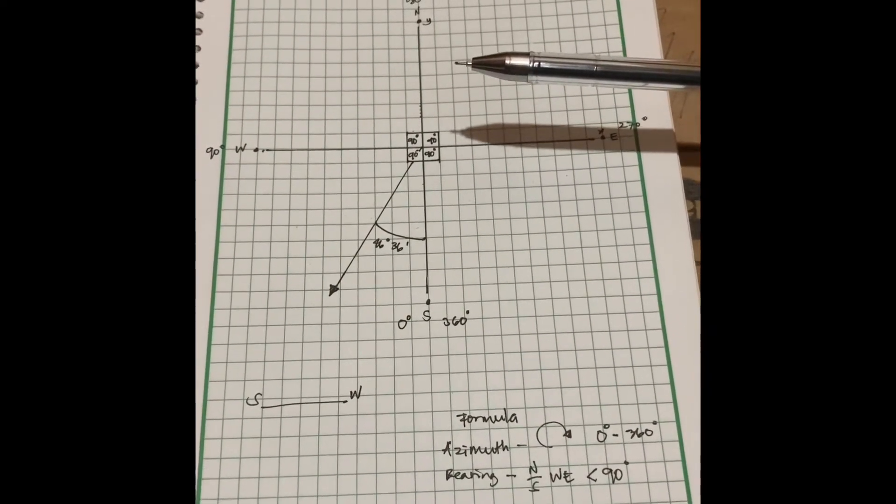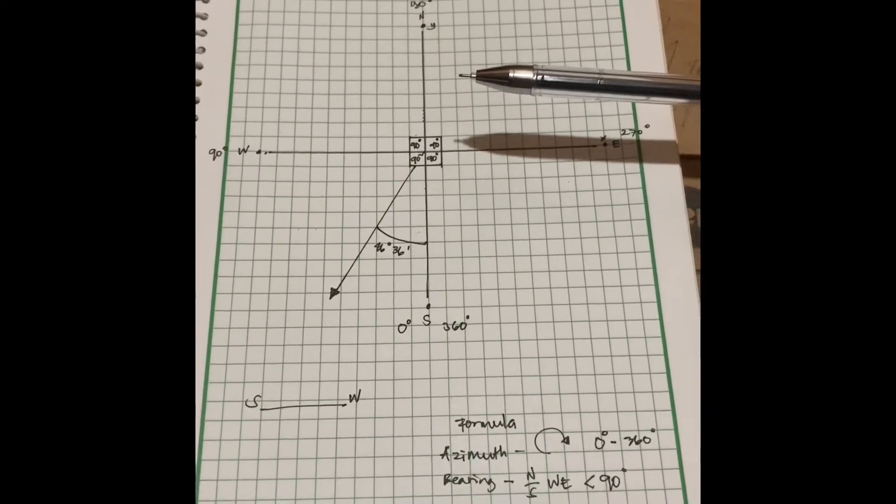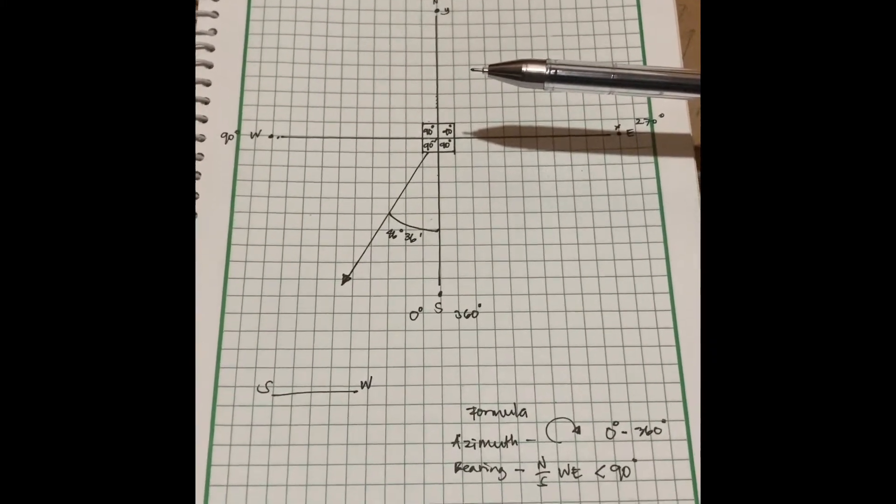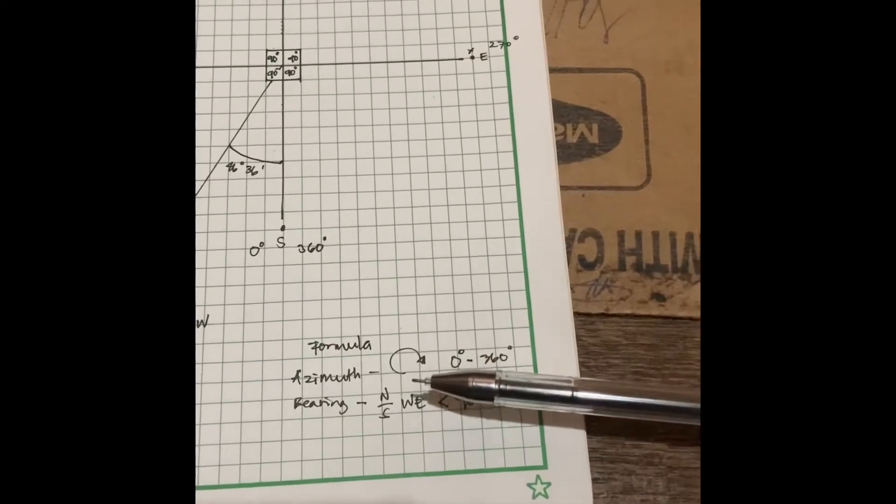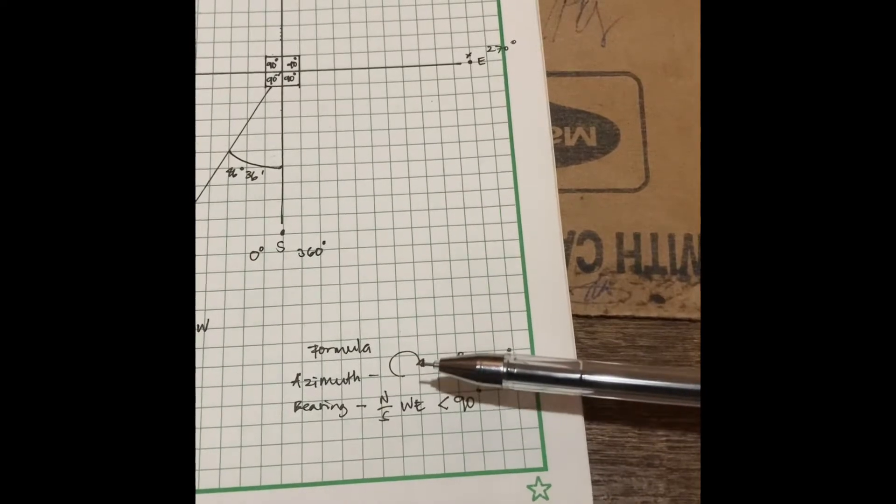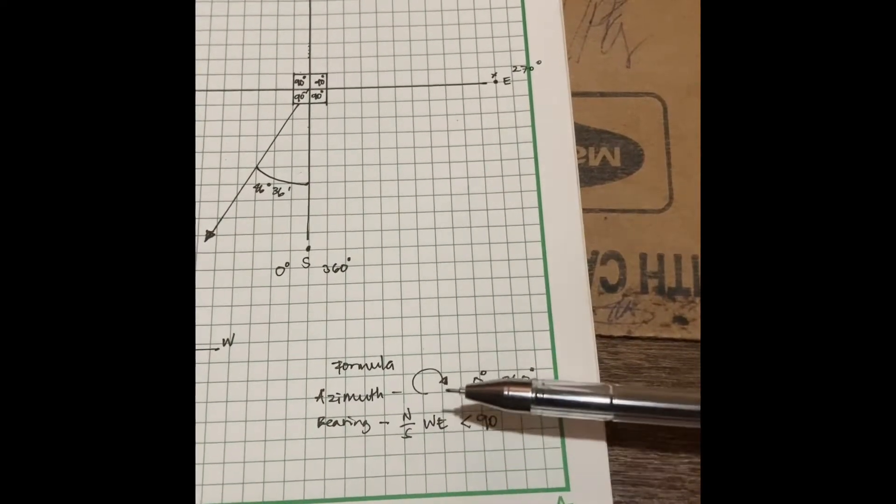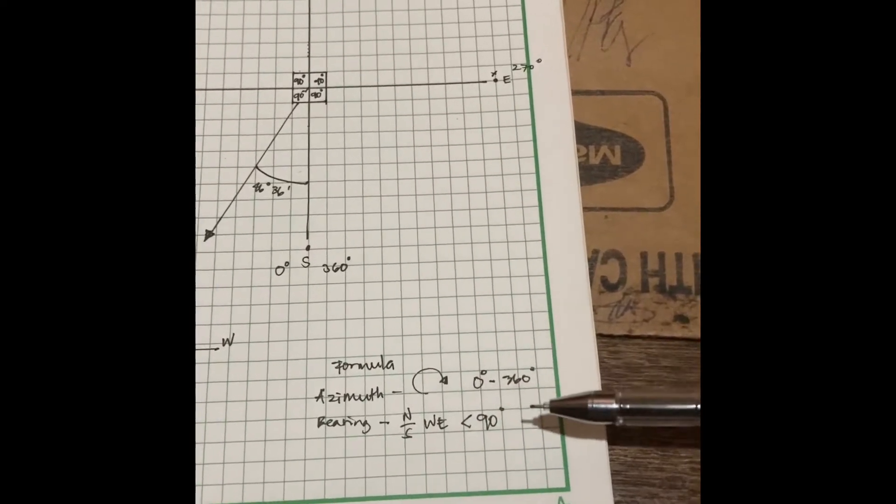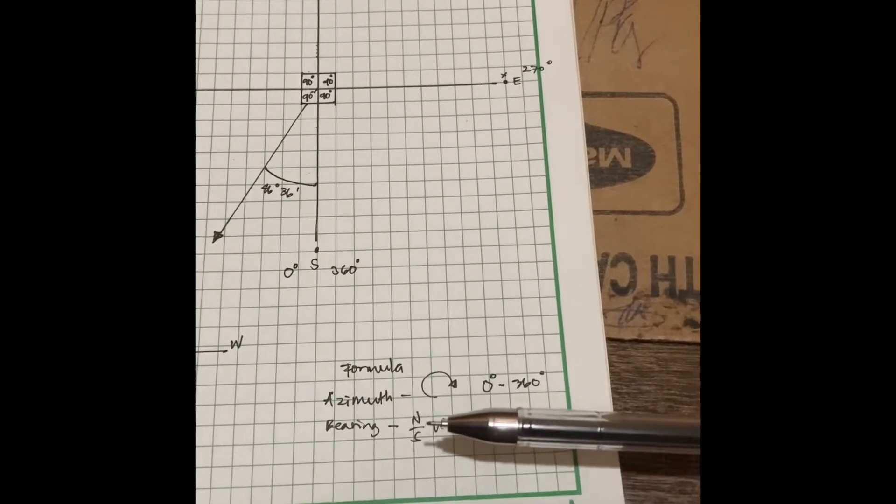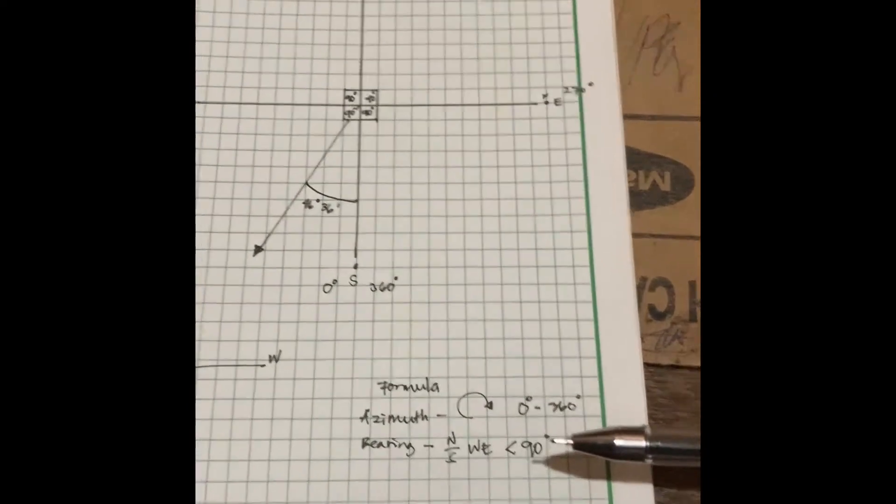In order to find the bearing, let us first recognize the formula. The azimuth is measured counterclockwise from 0 degrees to 360 degrees. The bearing is measured from north to south, west to east, using 90 degree angles.